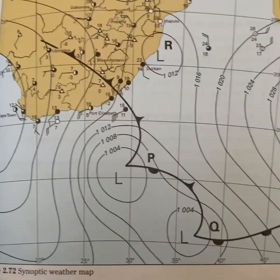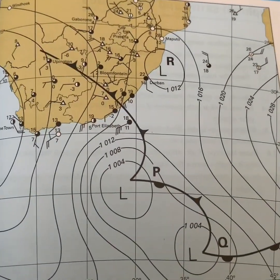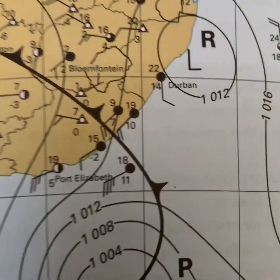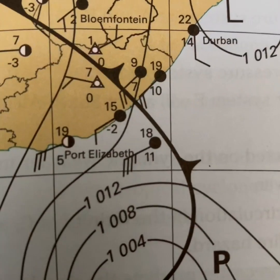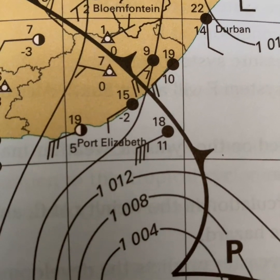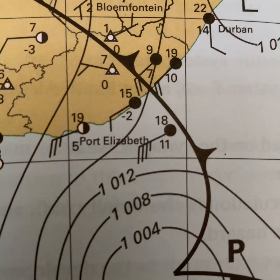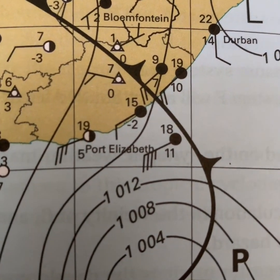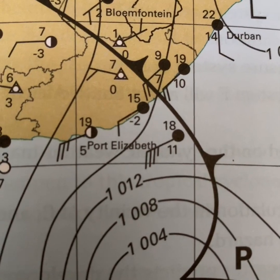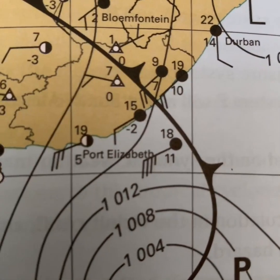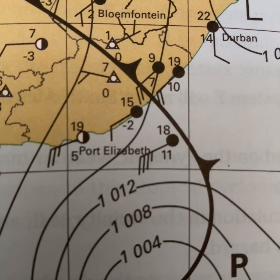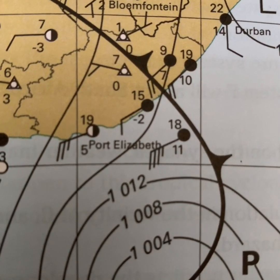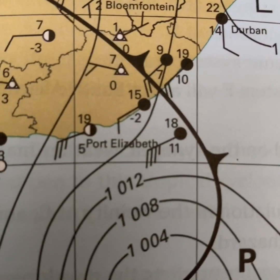Here's another synoptic weather map for more practice. The first question: describe the weather at Port Elizabeth. Zooming in to Port Elizabeth's weather station: the air temperature is 19 degrees, the dew point temperature is 5 degrees, the cloud cover is half as indicated by the half-shaded circle. The wind speed is 25 knots — there are two full lines (20 knots) and one half-line (5 knots), giving 25 knots, which is very fast.